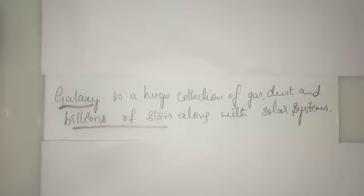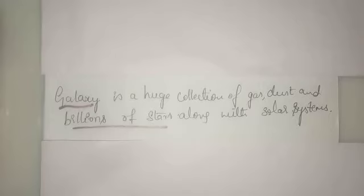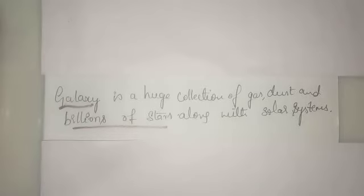Our galaxy belongs to the Milky Way. The stars we see from the earth during the night are other stars of the Milky Way. The stars which we see in the sky are present in our galaxy called Milky Way, and they appear small because when we look at them with our naked eyes, they are very small as they are far away.